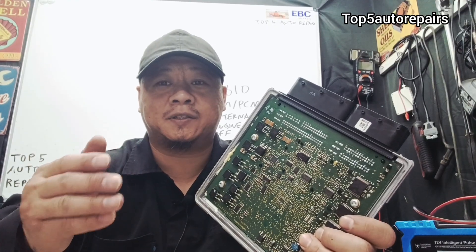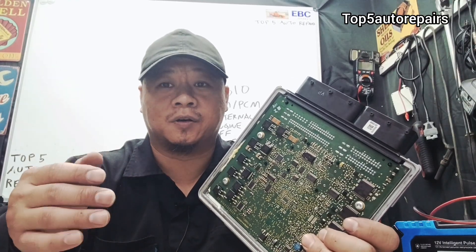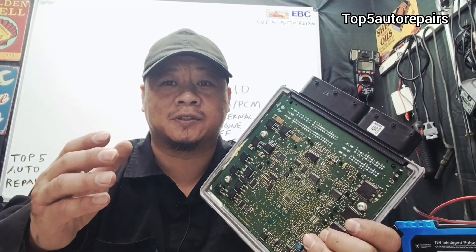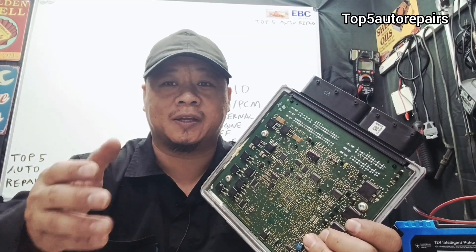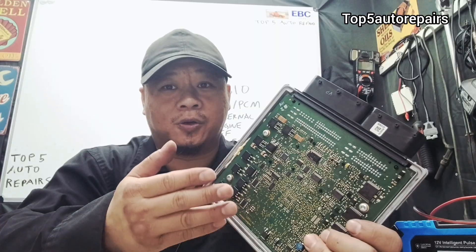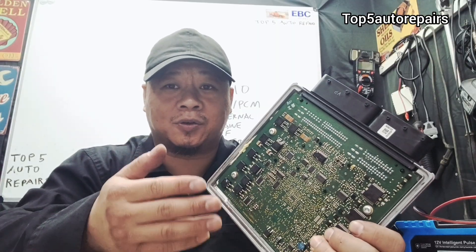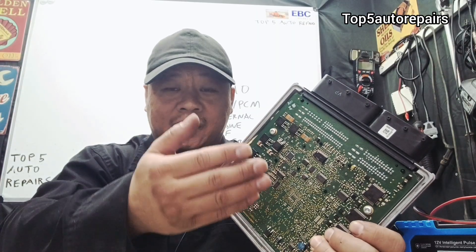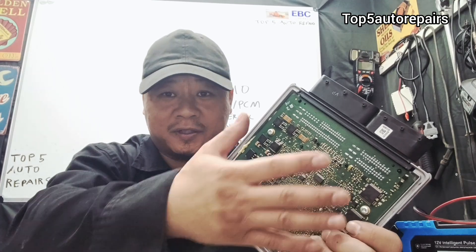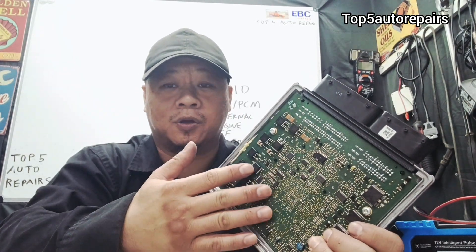What is P2610? P2610 has to do everything with the Engine Control Module, also known as the computer. Inside the Engine Control Module there is an Ignition Off Timer — basically a timer built into the Engine Control Module.